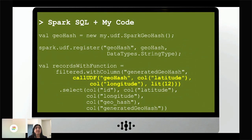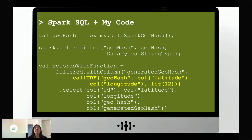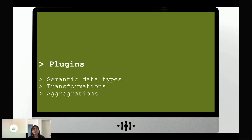But better than using Spark SQL alone is using Spark SQL with your own code — this is how you create your code lake. Here I create a new instance of a class called SparkGeoHash, a class I created. I can register this as a user-defined function in Spark SQL, and then I can call it inside Spark SQL queries. My legacy code gets encapsulated in a function and runs in a cluster with distributed processing and scalability.